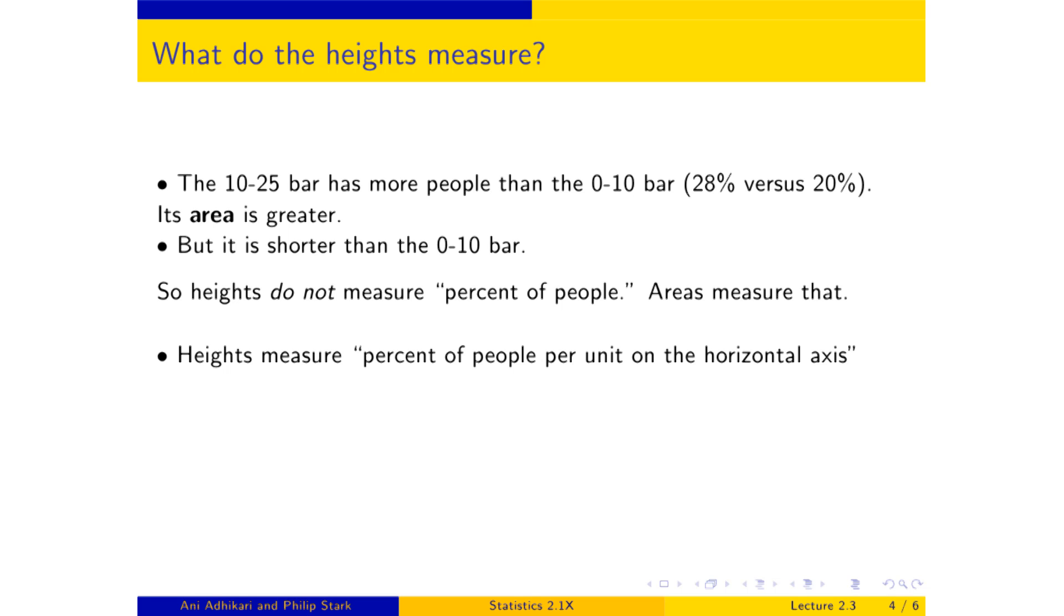Heights are measuring the percent of people per unit on the horizontal axis. In other words, how many people per unit of space. And what is that? People per unit of space. That's crowdedness. Heights measure density, or crowdedness in the interval.